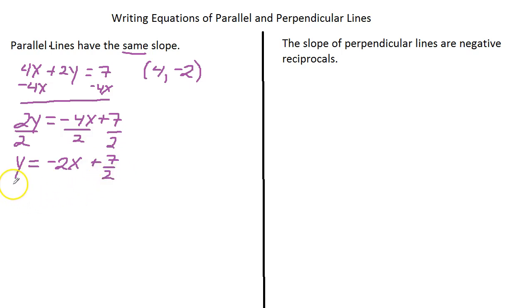Now remember, in slope intercept form y equals mx plus b, this negative 2 is in position m. So what does that mean? Negative 2 is the slope. Since it is the slope of the first line and the lines are parallel, it is also the slope of the second line.